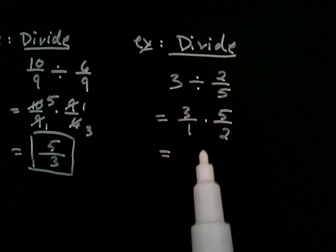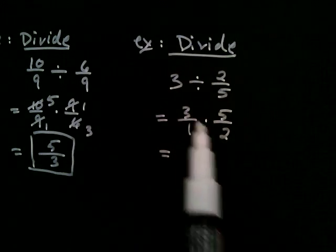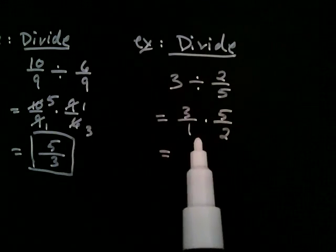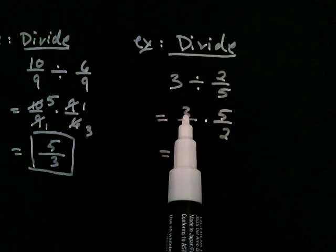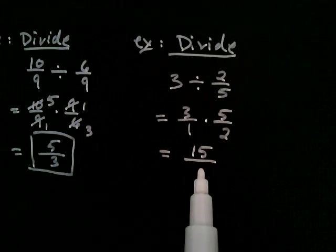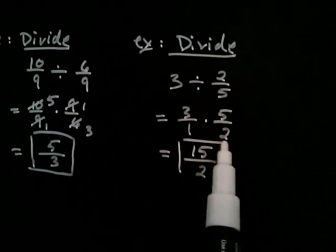And in this case, there's no cancellation, right? There are no common factors to be canceled in the numerator and the denominator. So we just multiply straight across. So three times five is fifteen, divided by one times two, which is two. And that's my answer, fifteen halves.